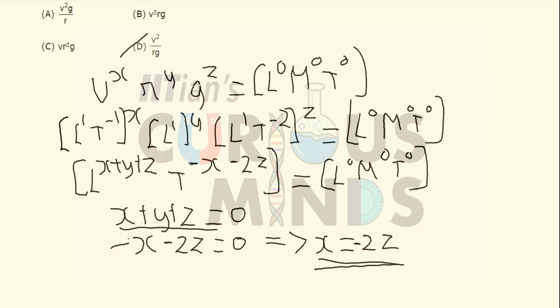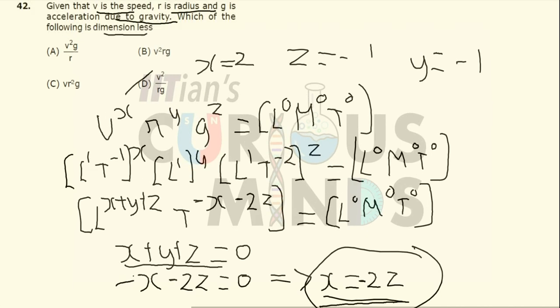and Z over here is equal to minus 1. So this condition is satisfied. And even the Y over here is equal to minus 1. So X plus Y plus Z will be equal to 0. So only in option number D, both these conditions are satisfied. So the correct answer will be option number D.